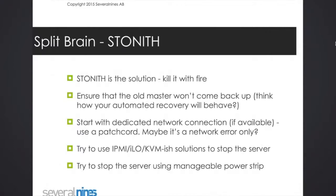If you have local servers on-premise, or if you have access to them, you have more options to choose from. For starters, what you can do is set up a dedicated network between the servers in the cluster. Usually there are at least two network interface controllers in the server, sometimes even more. So you can use some of them to actually build a separate network using separate dedicated switches to connect those servers.